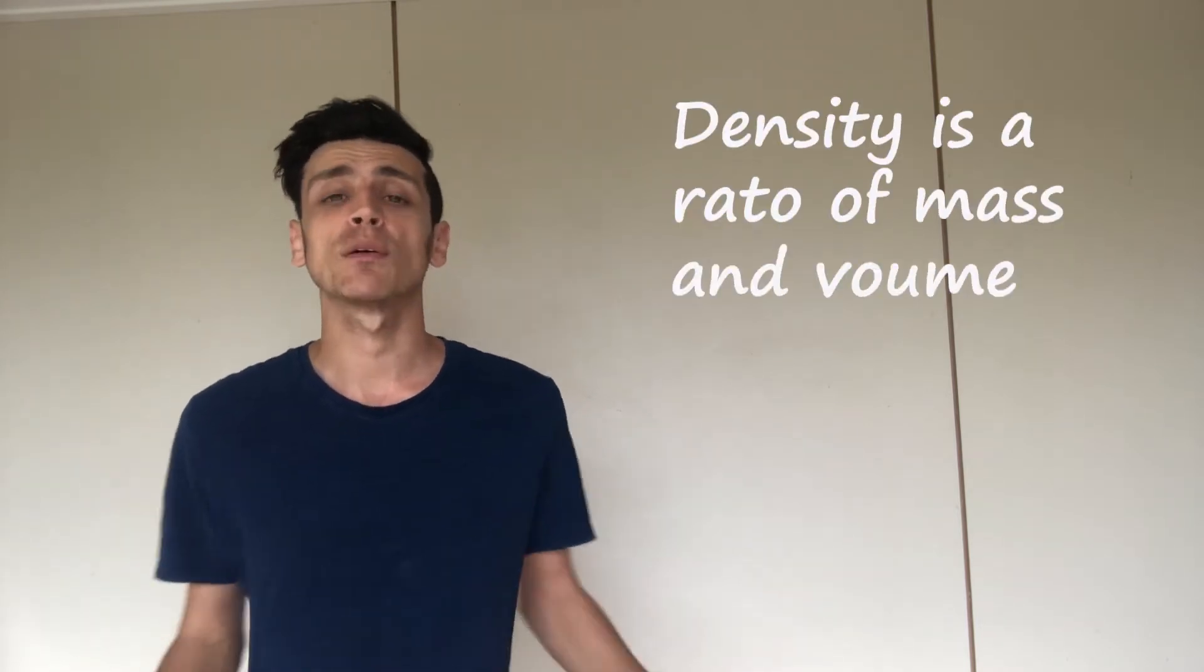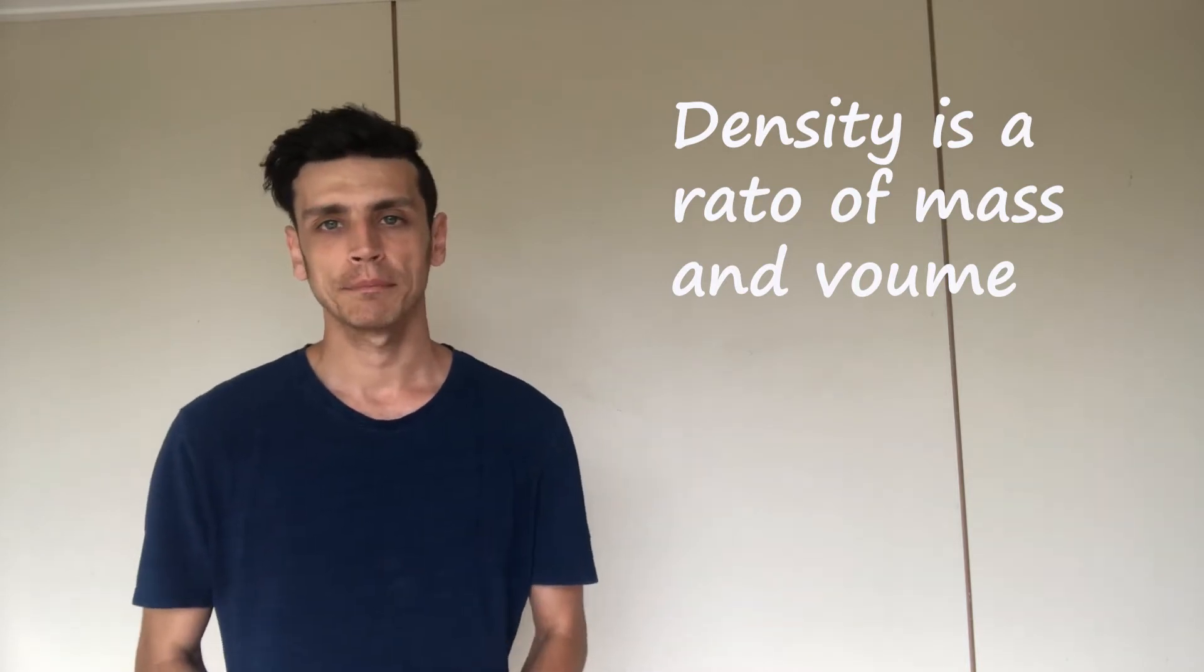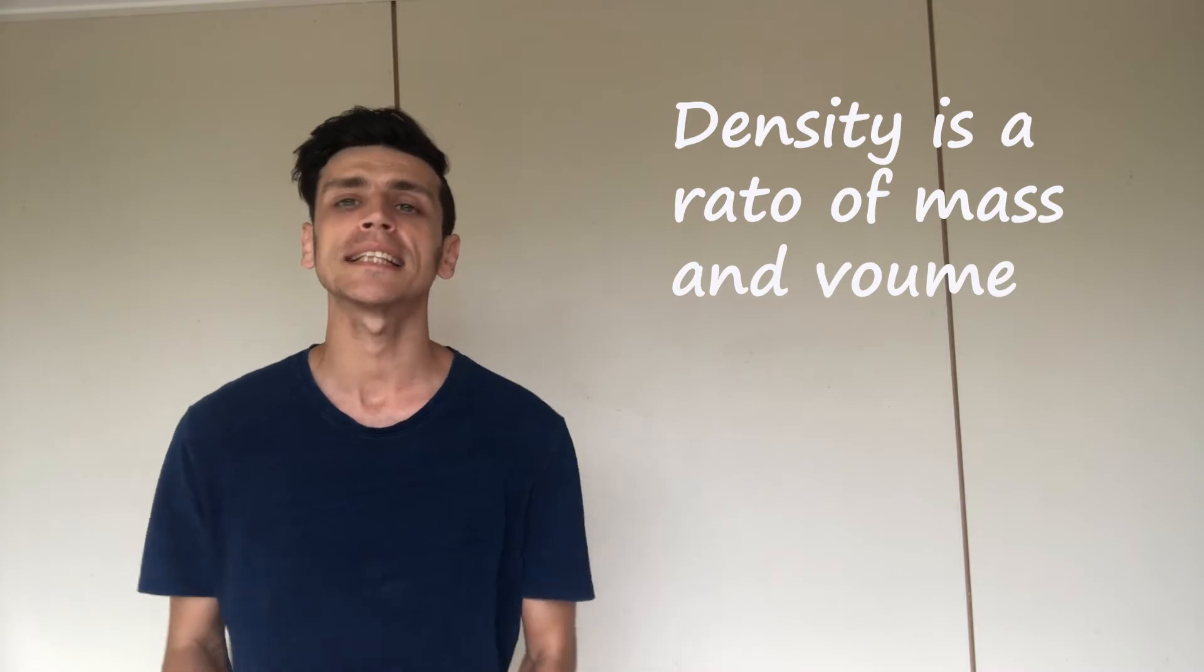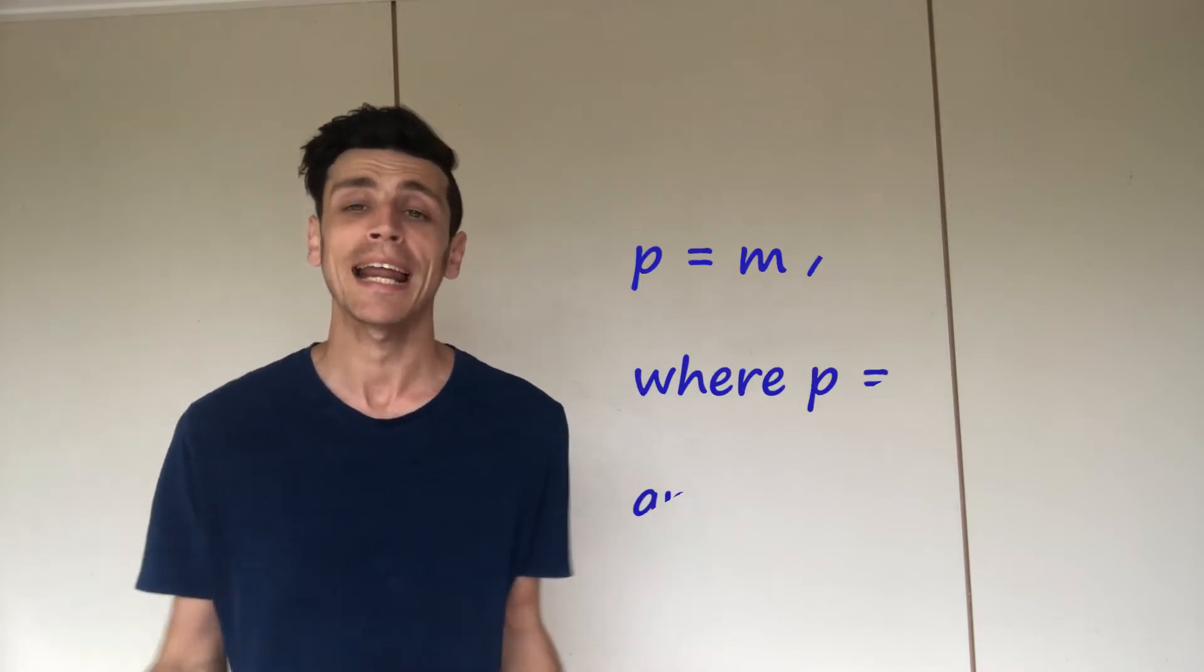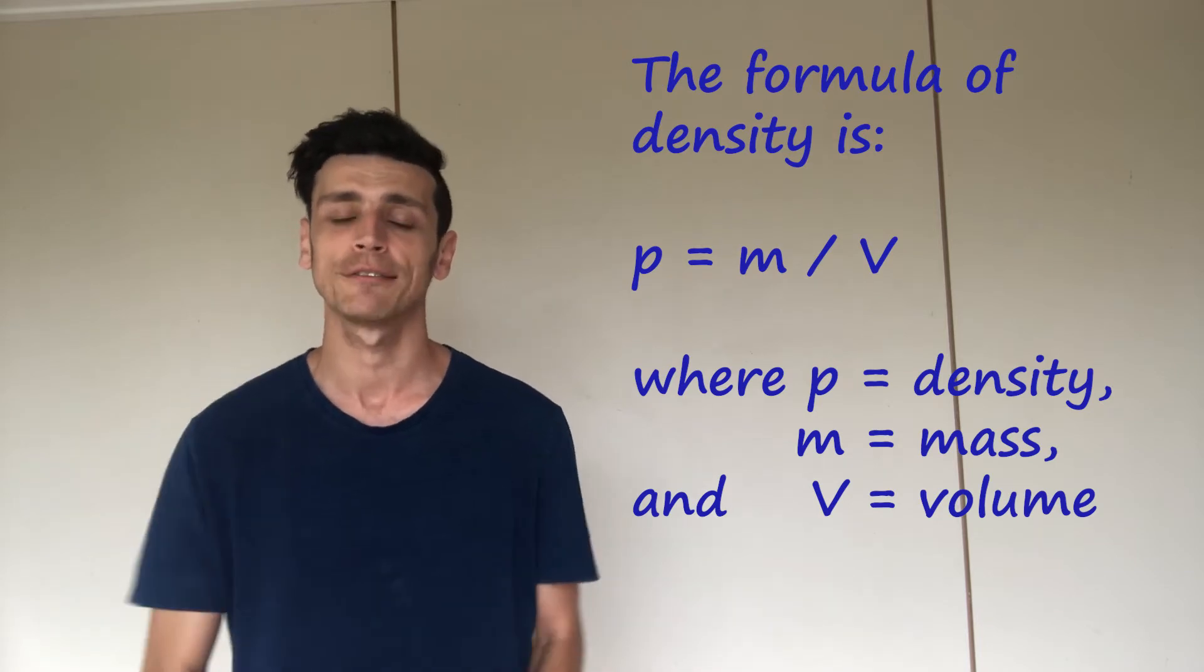When we're finding the density of something, density is a ratio of mass to volume. Mass is the weight of something and volume is the liquid version of this, so milliliters to liters, these sort of items. Density is a ratio between that and how we solve that is simply using the formula of density equals mass divided by volume.